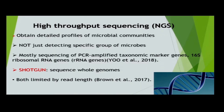Most of these are PCR-based - for example, 16S for bacteria. But more recently, shotgun sequencing: that's where you sequence fragments of DNA and try to analyze as much as you can. It's not just bacteria - it could be fungi, yeast, protozoa, and viruses too.